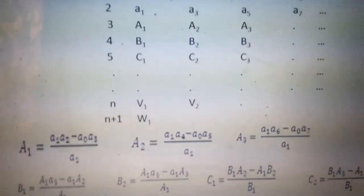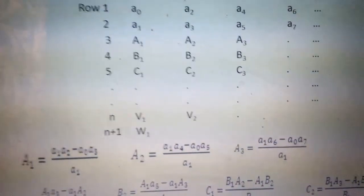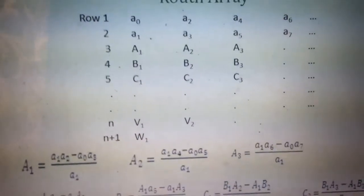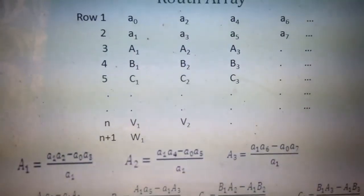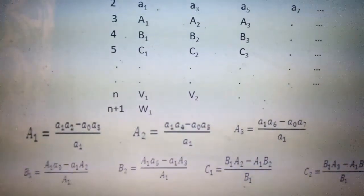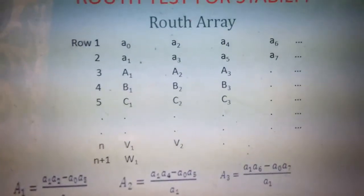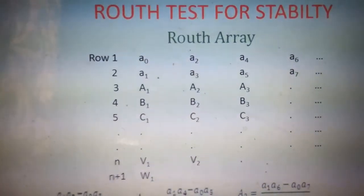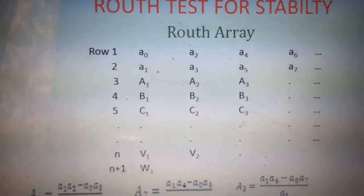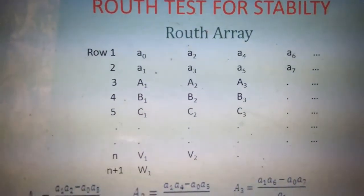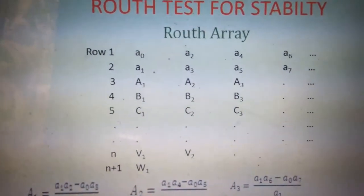For calculating the next element b2, we hide the second column and cross-multiply the elements in the preceding column and the next column. Like that, we fill all the elements in the matrix. Then we check whether all the elements in the first column are positive or negative. If the first column is positive, the system is stable; if it is negative, the system is unstable.